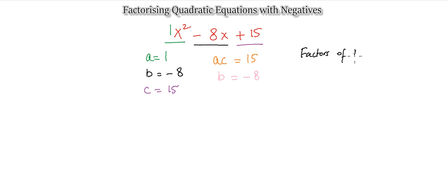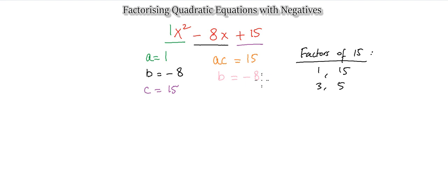Looking at the factors of 15: we can have 1 and 15, and we can also have 3 and 5. If you look at 1 and 15, it multiplies to give 15 but won't add to give 8. For 3 and 5, they multiply to give 15 and they add to give 8.